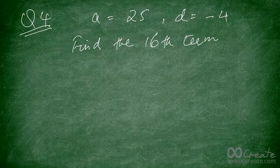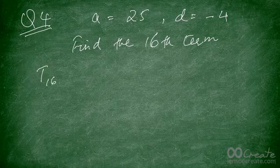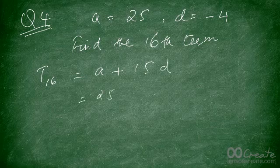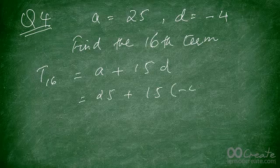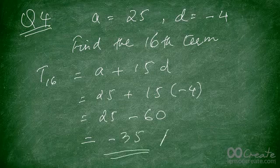Now: a = 25 and d = −4. Find the 16th term. Remember the difference is negative, so you have a decreasing series. The 16th term is a + 15d = 25 + 15 × (−4) = 25 − 60 = −35. That is your answer.